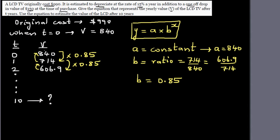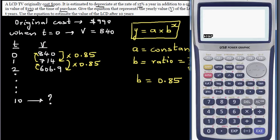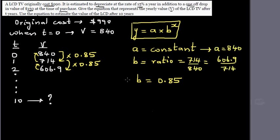So if you want to go backwards, so if you go 714 divided by 840, is the ratio, is decreasing by that ratio. Or if you go 606.9 divided by 714, that will also give you the same value, 0.85. So in this case, we are going to replace y by v and x by t.